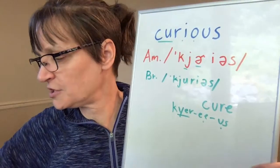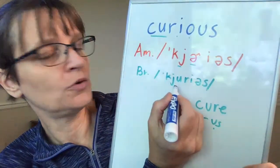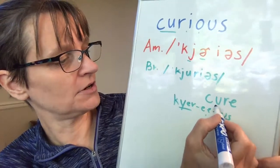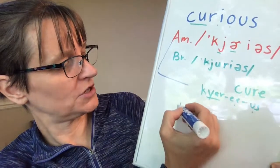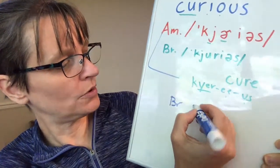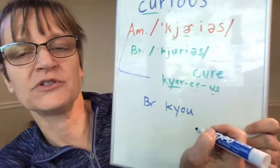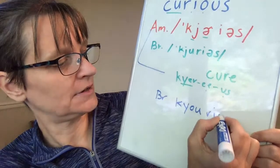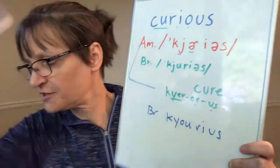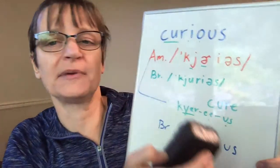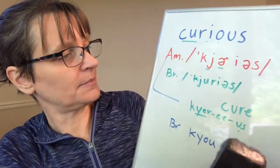The difference in British English would be that they tend to use more of a clear U vowel rather than just the 'er' sound. So American would be 'curious' and British would be 'curious.' I do think sometimes Americans will say a little bit of an 'ooh' there too — 'curious' — it's a little bit in between.